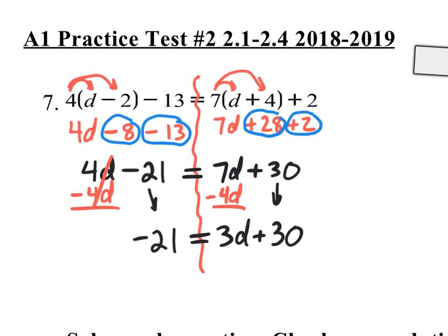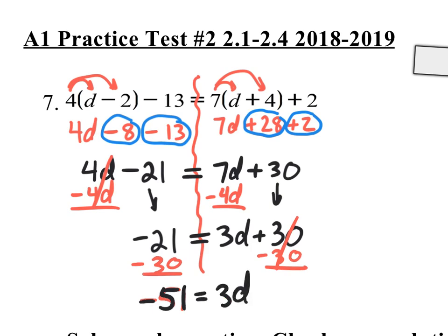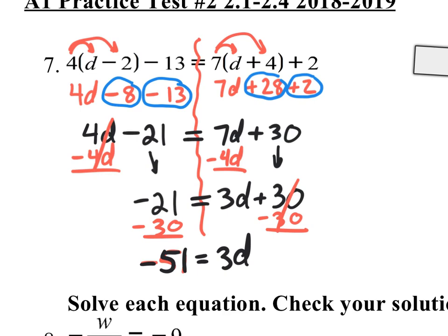Now I only have d on one side. I can focus on getting this d by itself on the right side. I'm going to get rid of the 30 first by subtracting 30 from both sides. Negative 21 minus 30 — you owe $21 and you owe $30, so you owe $51. That gives negative 51 equals 3d. Now it says 3 times d equals negative 51, so to get rid of the multiplication of 3, divide both sides by 3. d equals negative 51 divided by 3.